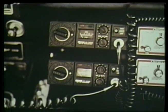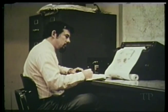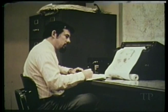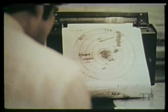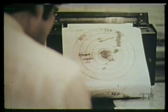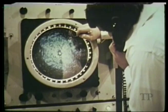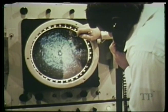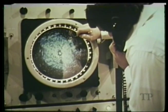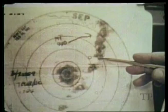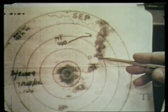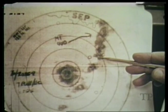3:15 p.m., tornado spotters are out in radio communication with the National Weather Service in Fort Worth. Reports from spotters are checked against radar reports from Stephenville. Radar is tracking the storm. The storm shows nothing dangerous at this time.